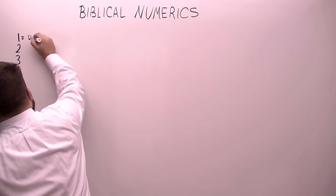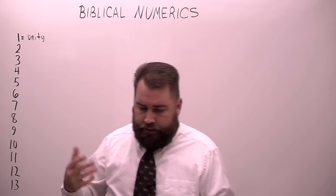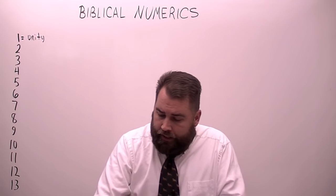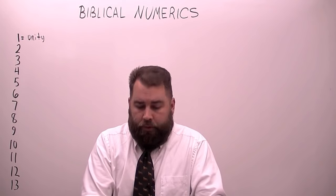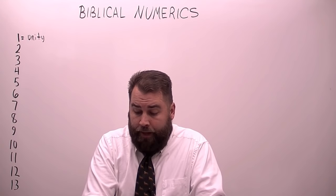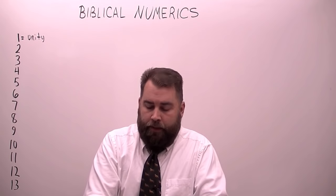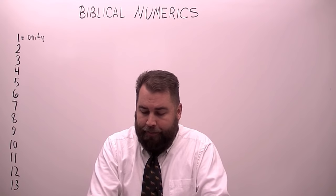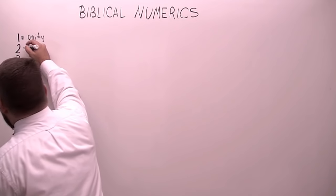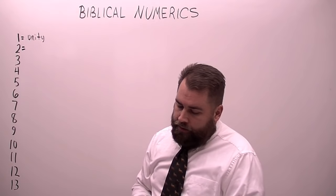First, the number one, as you would probably assume, is the number of unity — a unit. It symbolizes the unity of God. In Ephesians 4:4-6 we have seven distinct 'ones' in the Bible: one body, one spirit, one hope, one Lord, one faith, one baptism, one God. So one is the number of unity or a unit of one thing. Like I said, they teach this in Bible school, and some of it is redundant, but some of this hopefully will be a blessing and something you will learn.